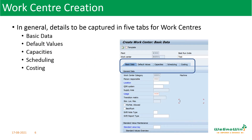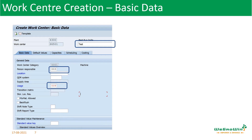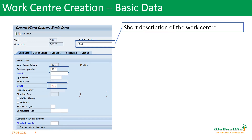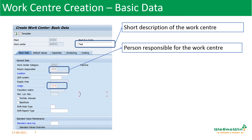We go into the screen where we see basic data, default values, capacities, scheduling, and costing — there are five tabs normally available in work centers. In basic data, we can enter the short description and the work center name, such as lathing machine or painting unit. Then we give who is the person responsible for the work center. In various reports, we can analyze the work center's details using this person responsible parameter, so each person will be assigned responsibility for each work center to identify responsibilities clearly.